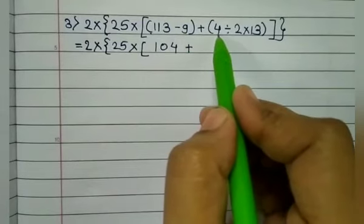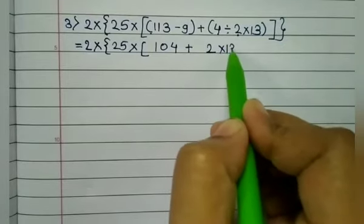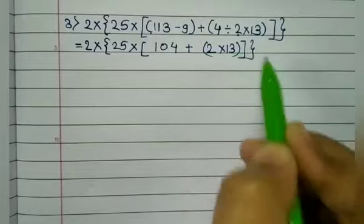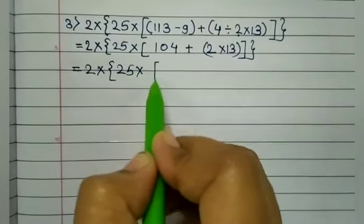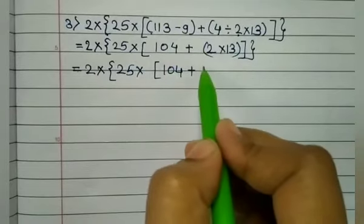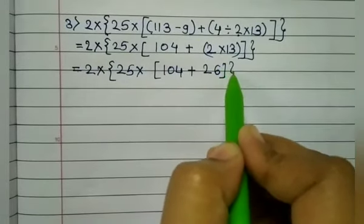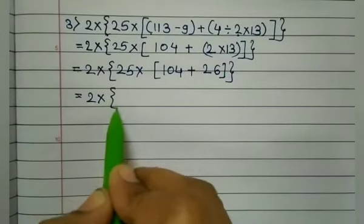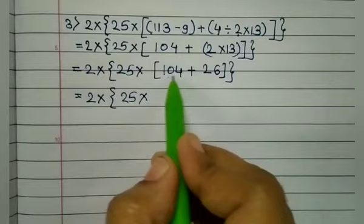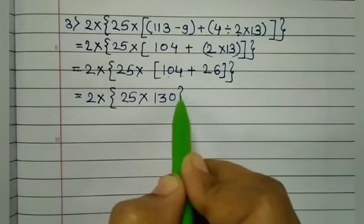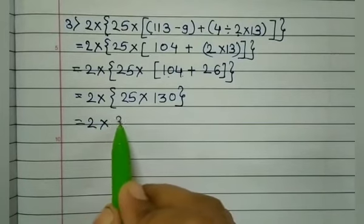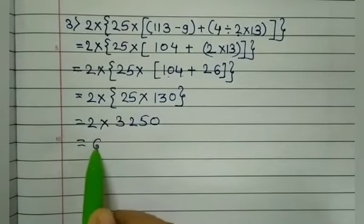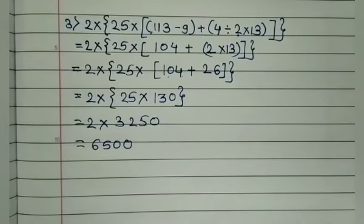Solving the innermost bracket first: 4 divided by 2 equals 2, into 13 equals 26. Now: 2 into curly bracket 25 into (104 plus 26), which is 130. Then 2 into 25 into 113 equals 33,250, which gives 6,500. So the answer is 6,500.